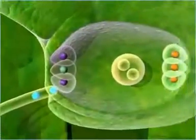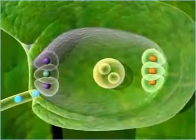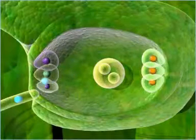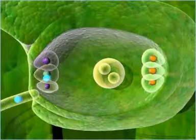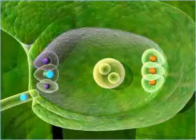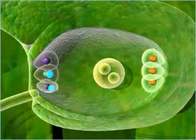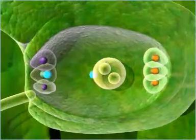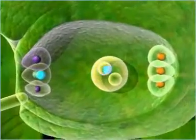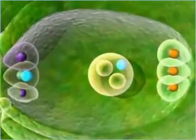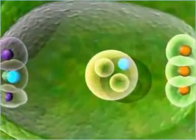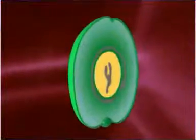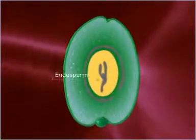Note that out of the two sperms released in the embryo sac, one undergoes generative fertilization, whereas the other sperm cell fertilizes the two polar nuclei of the central cell. In this case, as fusion of three haploid nuclei takes place, the process is called triple fusion. The triple fusion results in the formation of endosperm.